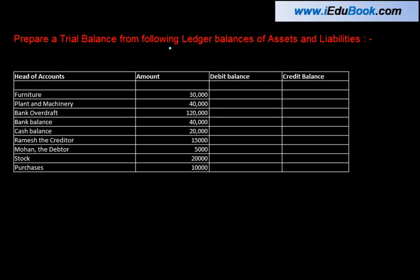Prepare a trial balance from the following ledger balances of assets and liabilities. What this means is that if something is not an asset or a liability, we will exclude it. So let's pick them one by one. The first one is furniture — furniture is an asset, right? An asset has a debit balance, so this will come on the debit side with 30,000.